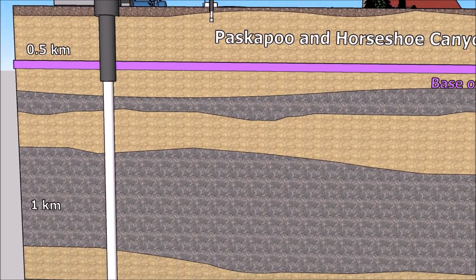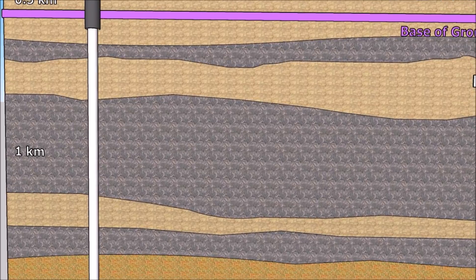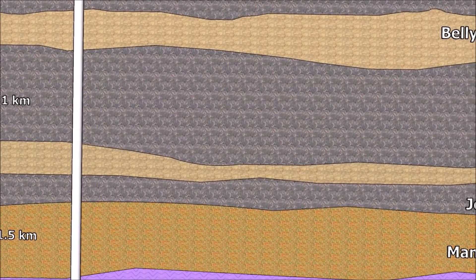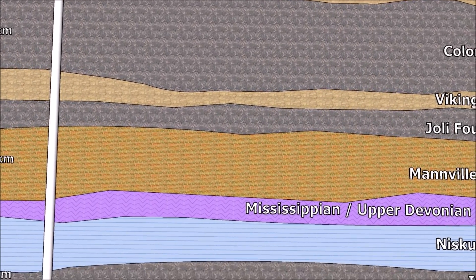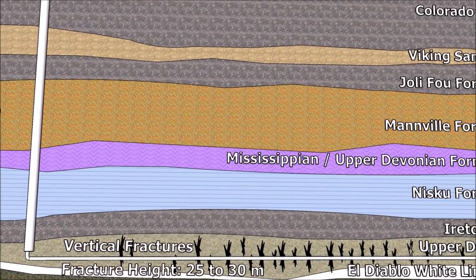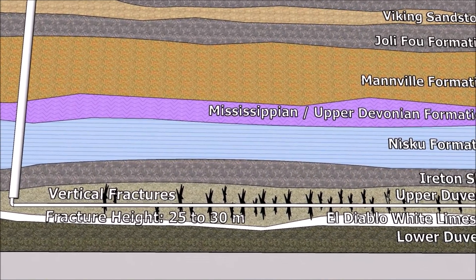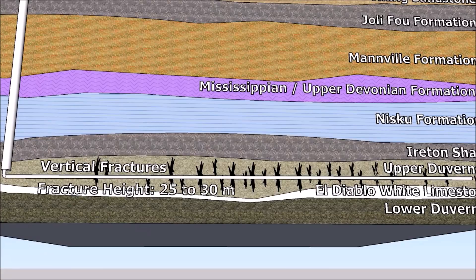The East Duvernay shale formation ranges between 2200 and 2400 meters below ground surface, which is true vertical depth. The modeled vertical propagation of an East Duvernay frac is between 25 to 30 meters, which provides over a 2 kilometer separation distance between domestic use aquifers. Let's rotate and look at the shallow bedrock hydrogeology.